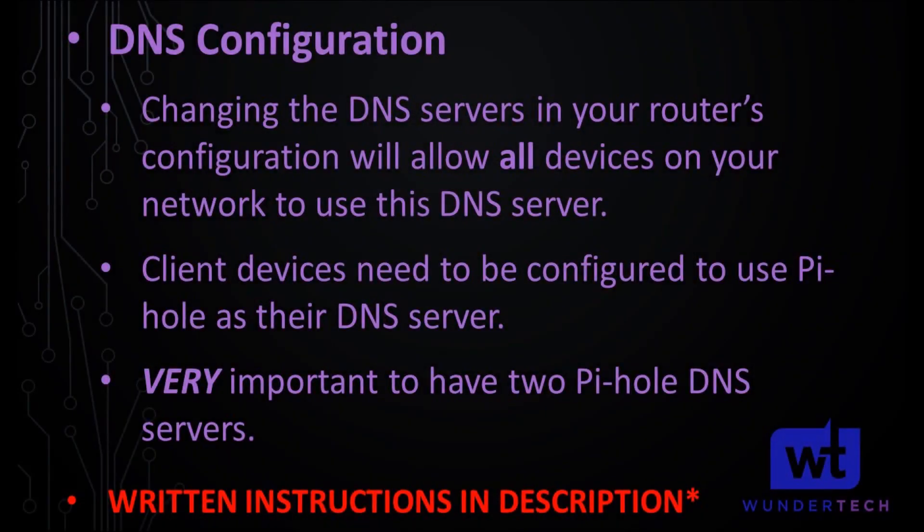The last thing we need to do is set up the DNS configuration on client devices. What I normally do is point my router to this DNS server so every device connected to my router uses Pi-hole as its DNS server. However, you don't have to — you can configure it on a per-device level, though you'd have to do it for every device. In the written instructions I have links showing how to do this on Windows, Mac, or Linux. Until you do this, the Pi-hole DNS servers will not be used — it's the final step, and every router is different.